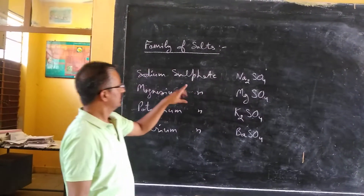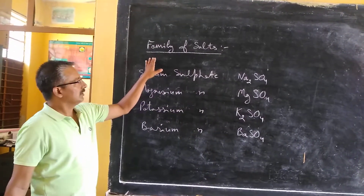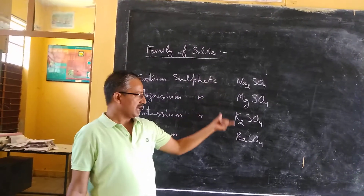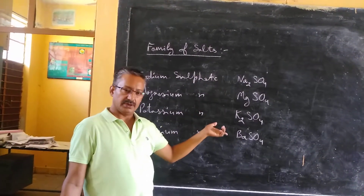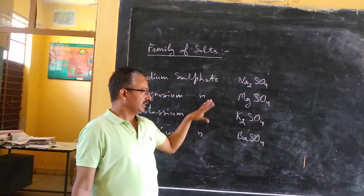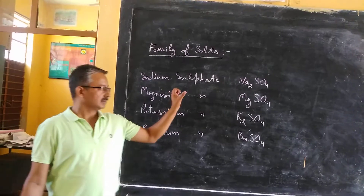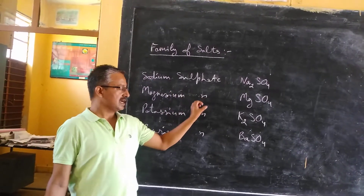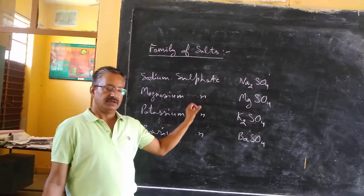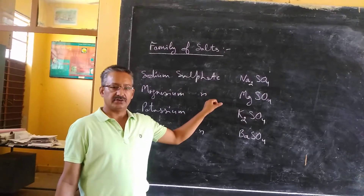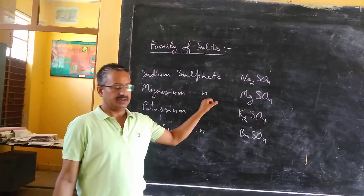So, how can we assign a family? Whichever ion is common between any two or more salts, those salts become members of that particular family.